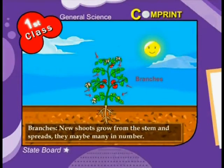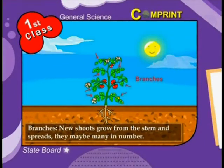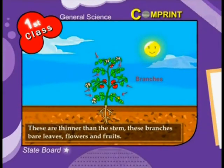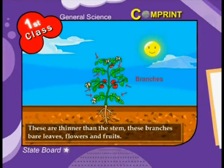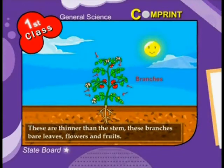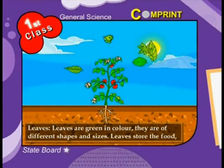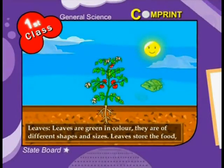Branches: new shoots grow from the stem and spread. There may be many in number. These are thinner than the stem. These branches bear leaves, flowers, and fruits.